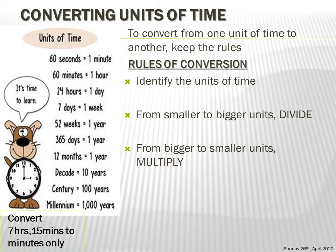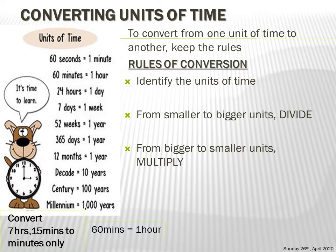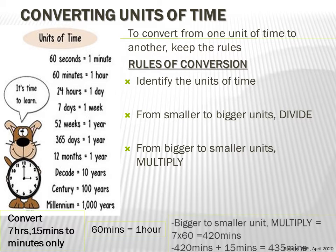Let's look at an example: convert 7 hours 15 minutes to minutes only. The question contains hours and minutes, but asks us to convert to minutes. Look in the units of time chart for the entry containing hours and minutes — that is: 60 minutes make one hour. We don't need to worry about the 15 minutes yet, because it is already in minutes. We only need to convert the 7 hours, then add the 15 minutes.